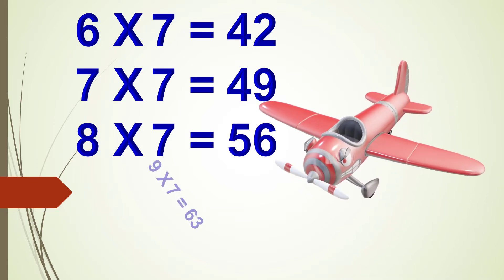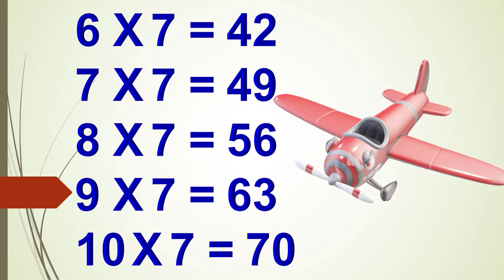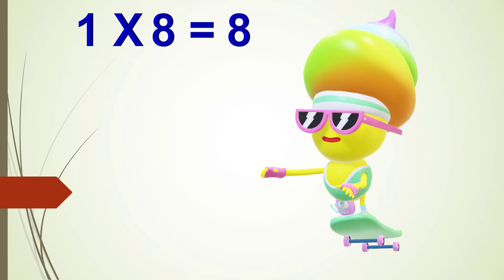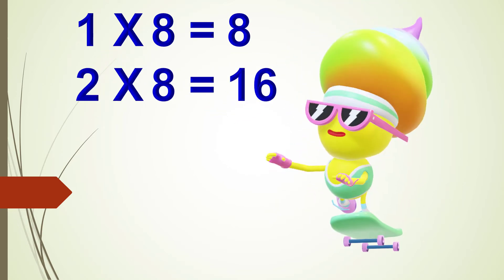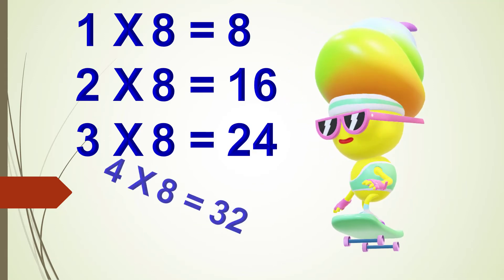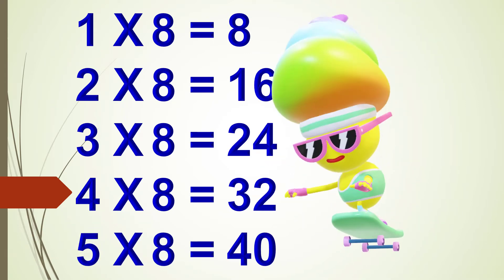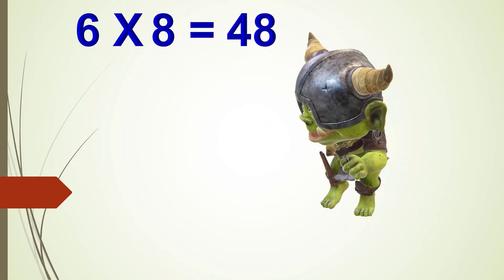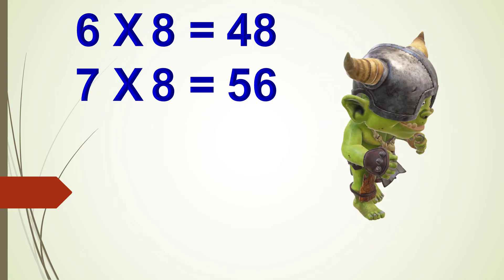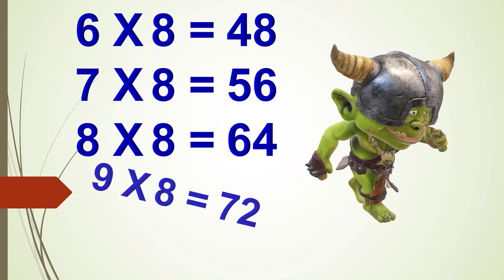Nine times seven are sixty-three, ten times seven are seventy. One times eight is eight, two times eight are sixteen, three times eight are twenty-four, four times eight are thirty-two, five times eight are forty, six times eight are forty-eight, seven times eight are fifty-six, eight times eight are sixty-four, nine times eight are seventy-two, ten times eight are eighty.